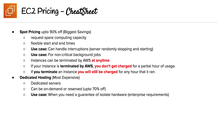The last pricing model is dedicated hosting — it's the most expensive option, consisting of dedicated servers. It can be utilized as on-demand or reserved, so you can save up to 70% off. The use case here is when you need a guarantee of isolated hardware, such as enterprise requirements. And that covers all of EC2 pricing.